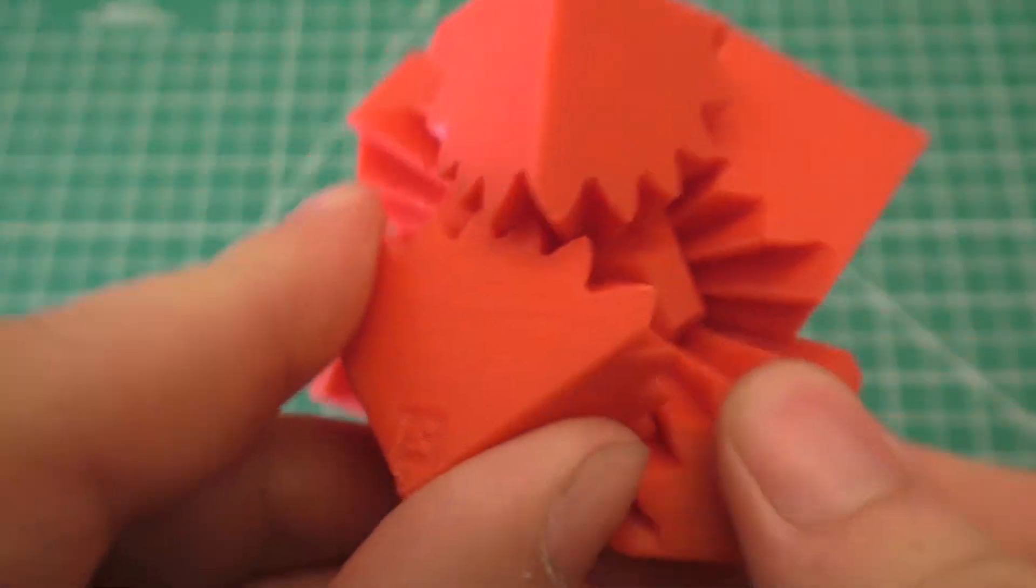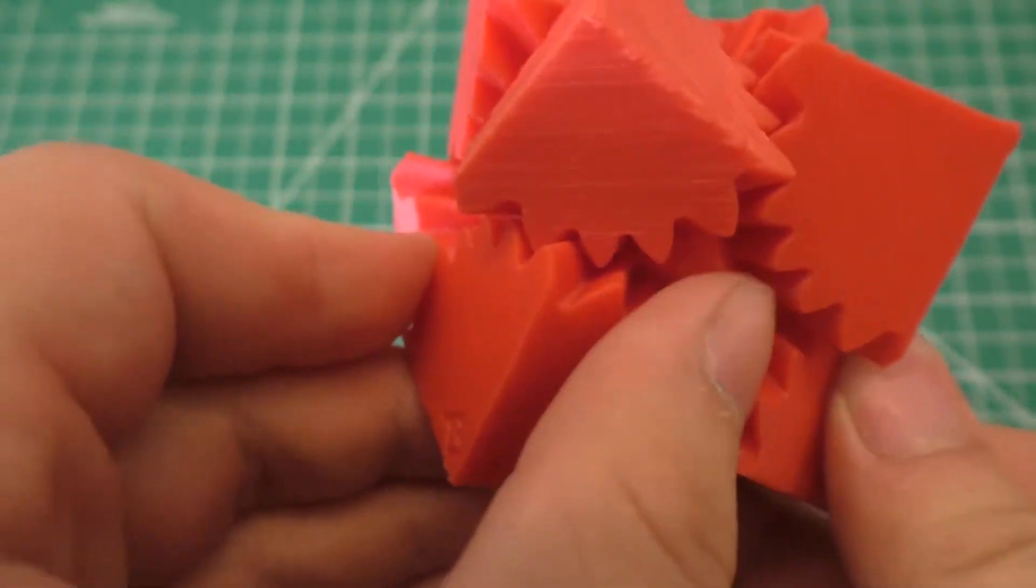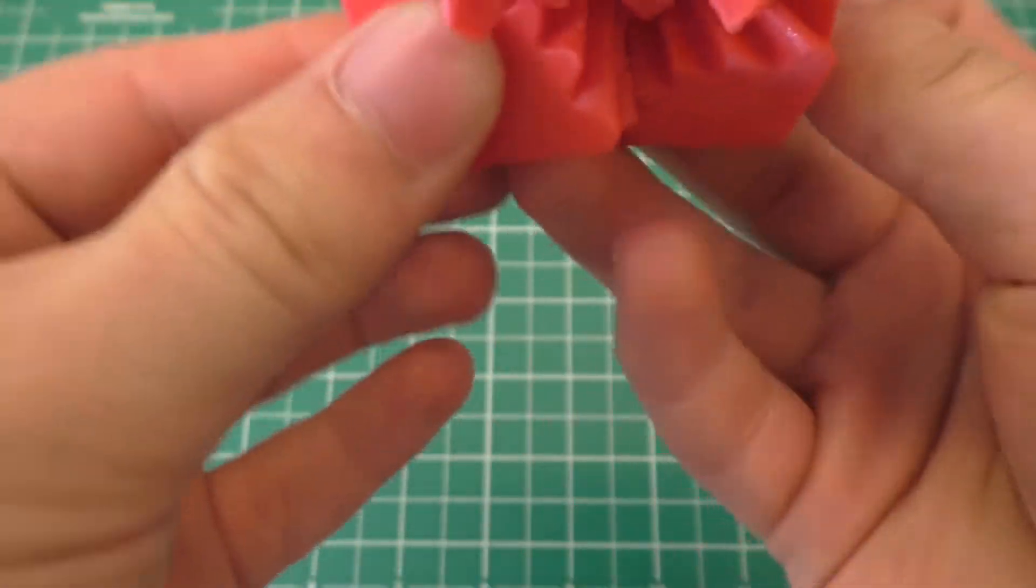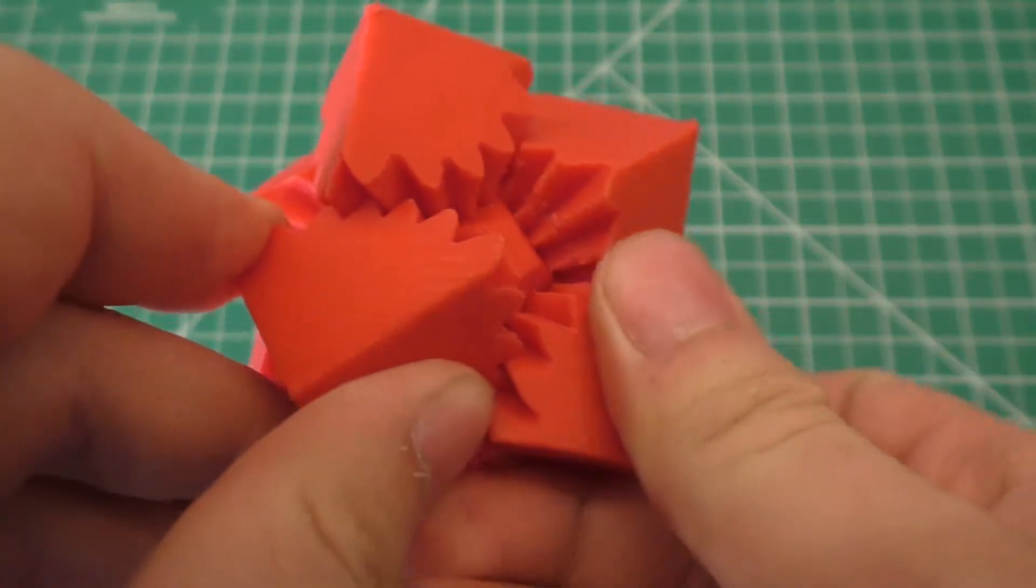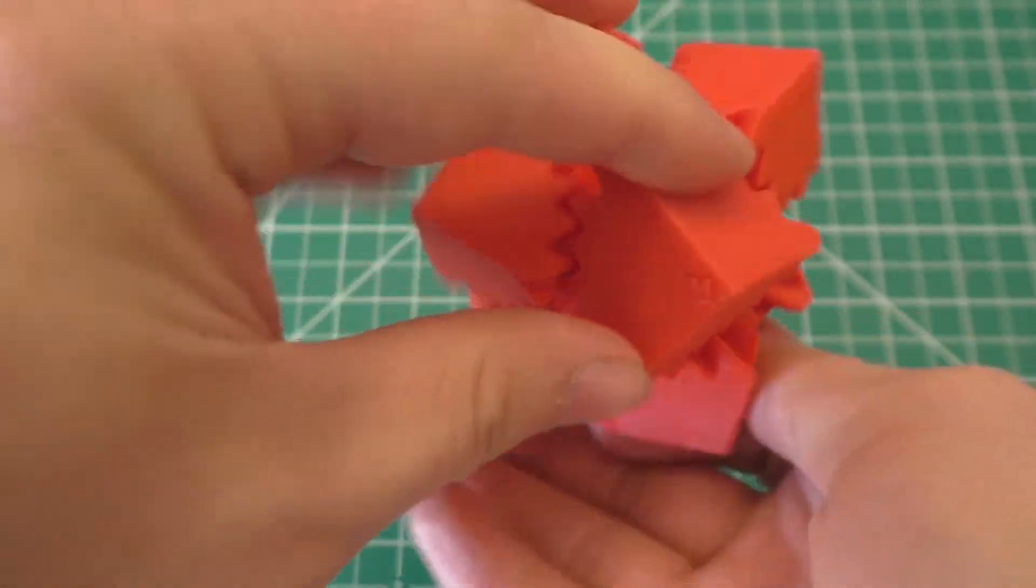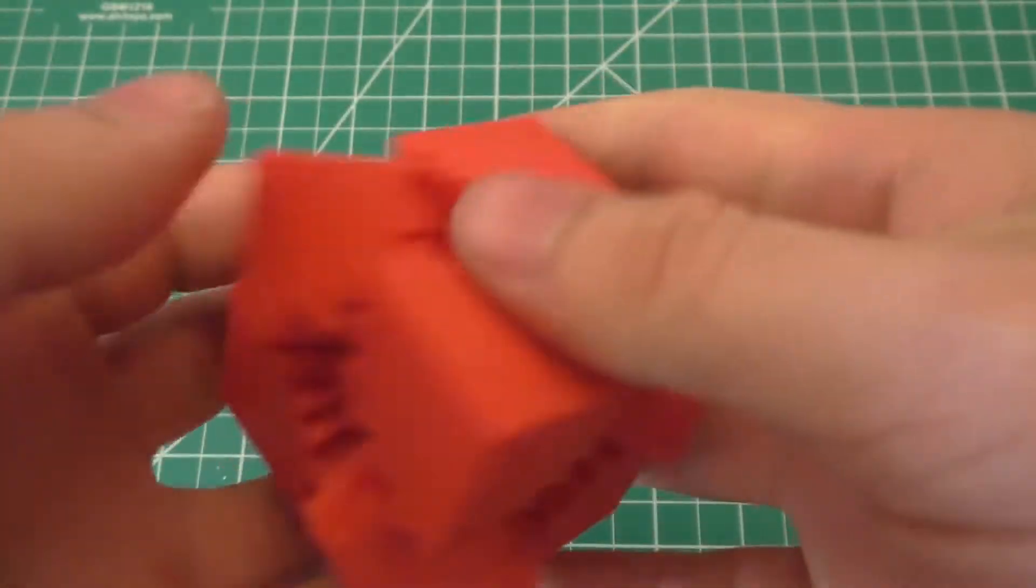And it'll eventually turn itself back into a cube. But as you can probably tell, it's a little bit difficult to spin this thing, especially if you have big fingers. So I figured we can go ahead and make a bigger one.